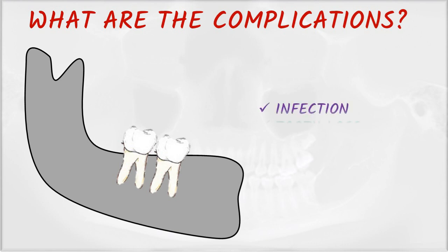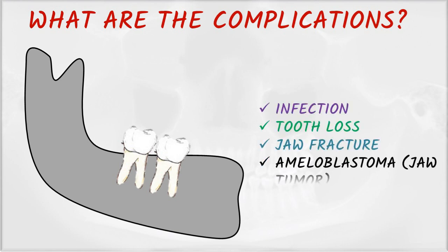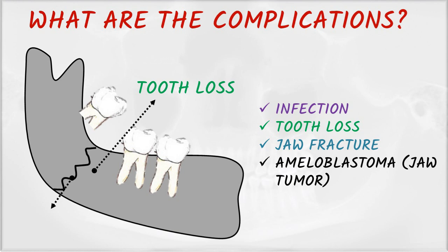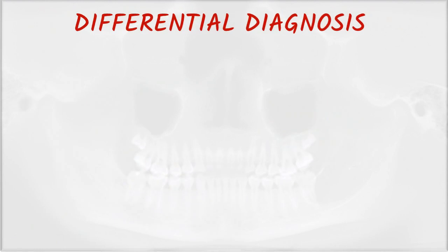What are the complications associated with the cyst? Infection, tooth loss, jaw fracture, and ameloblastoma — a jaw tumor. If the third molar is removed or lost, there is a chance of jaw fracture in cases of dentigerous cyst. Ameloblastoma is the most common complication associated with untreated dentigerous cyst.